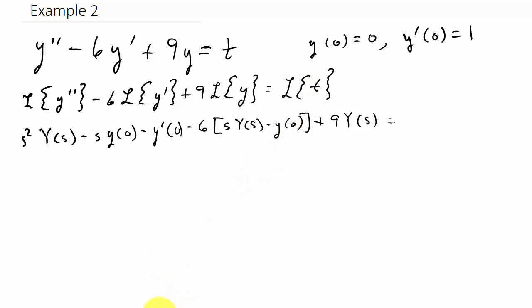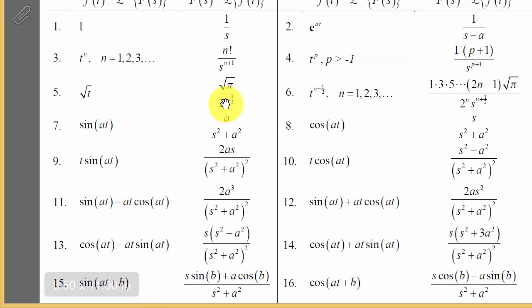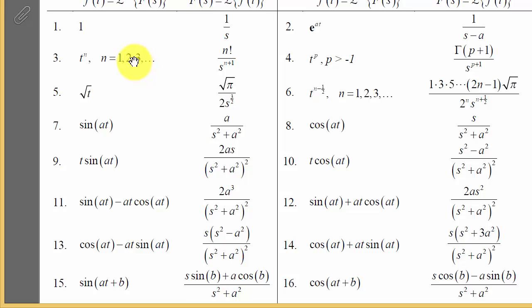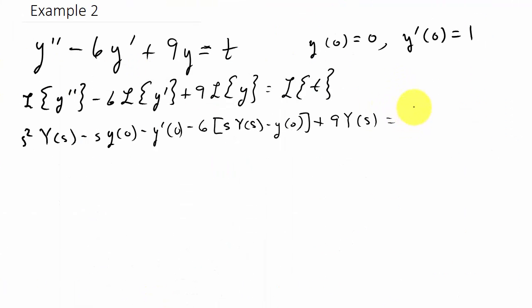Well, what's the Laplace transform of t? If you remember from your table, using t to the n with n = 1, then 1 factorial is 1, and 1 plus 1 is 2, so that would be 1 over s².